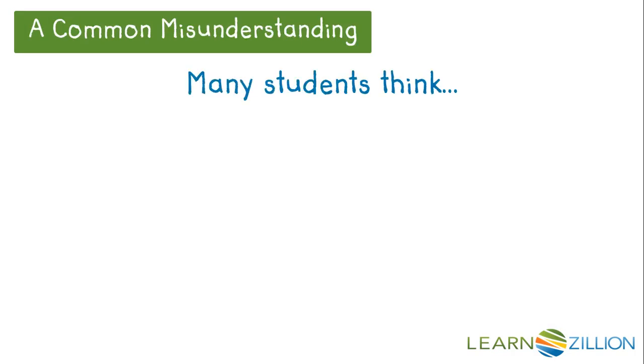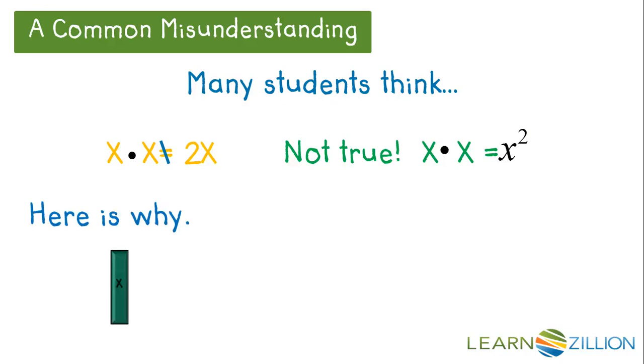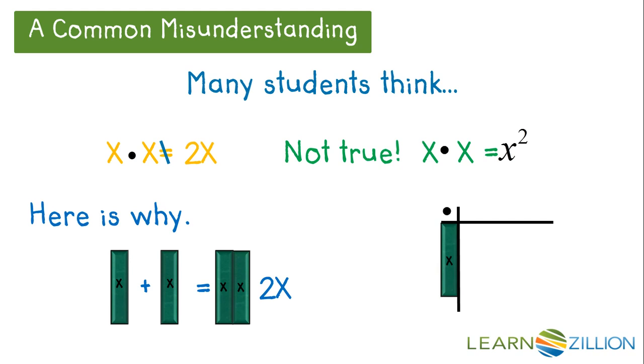Many students think x times x equals 2x. Not true. x times x equals x squared. Here's why. x plus x equals 2x. However, x times x is x squared.